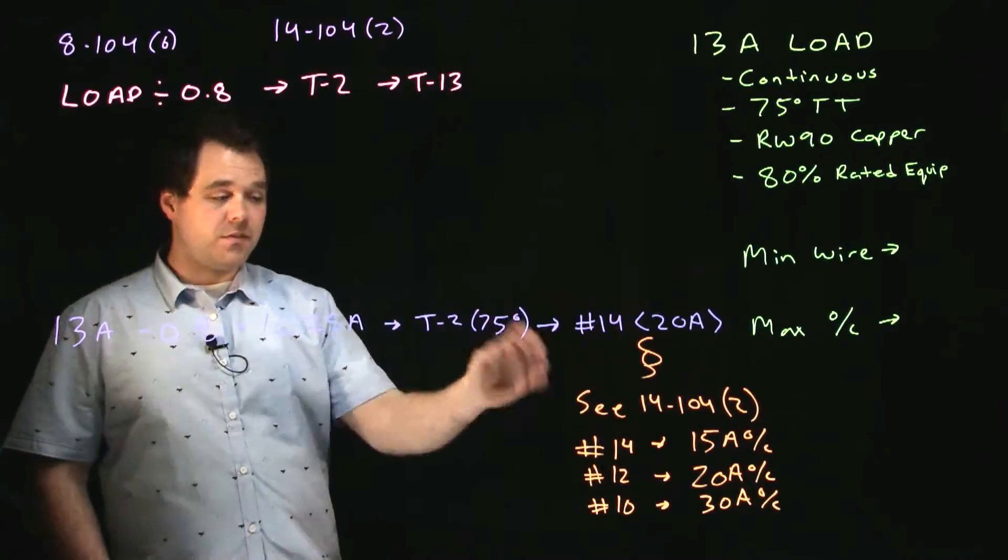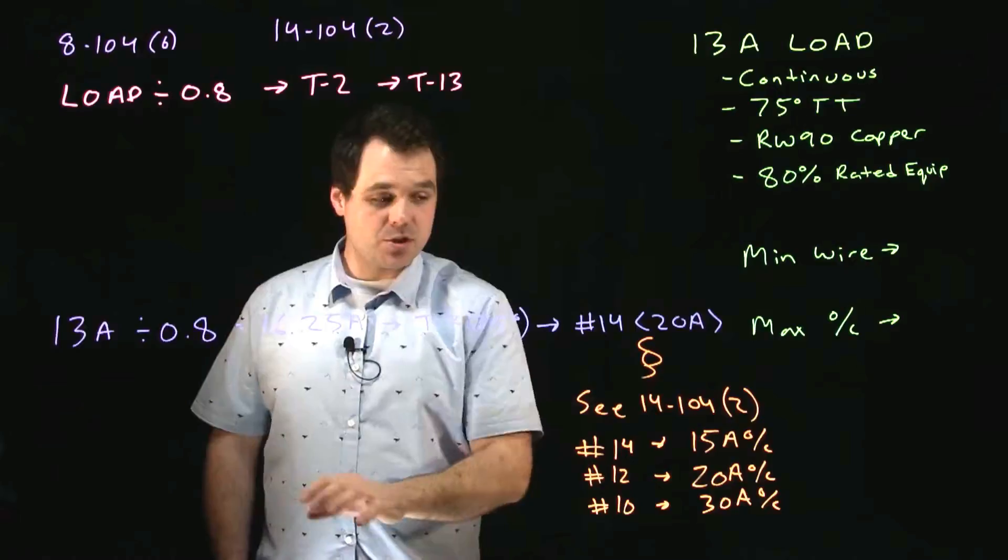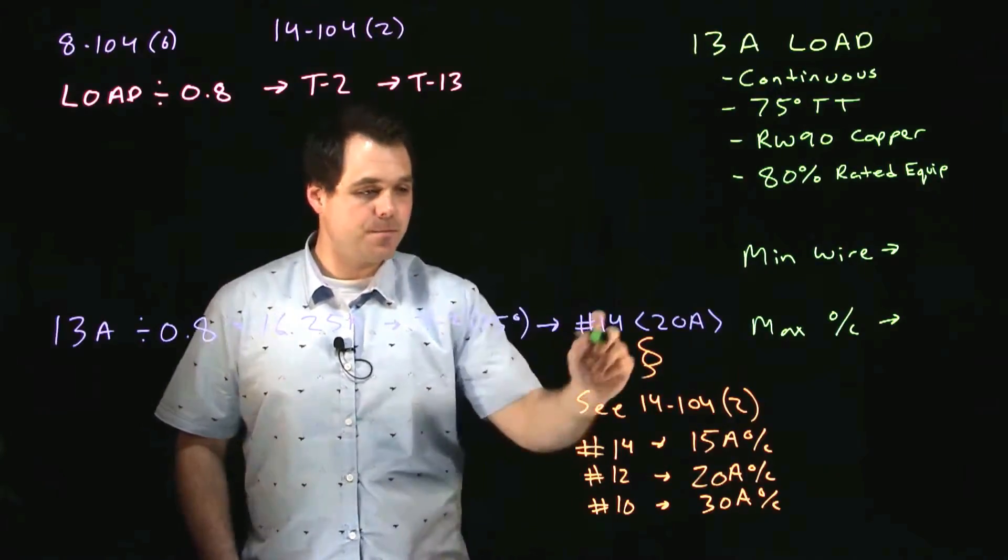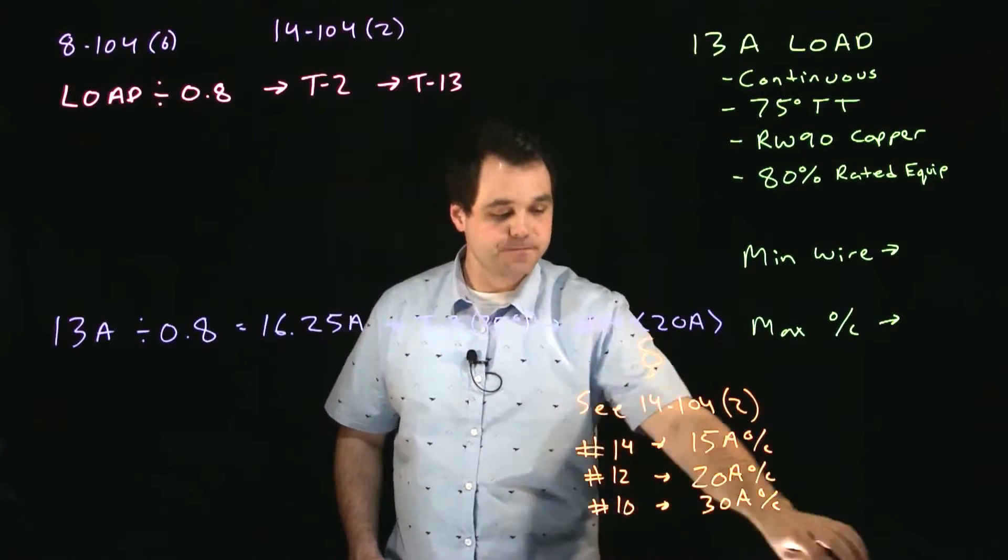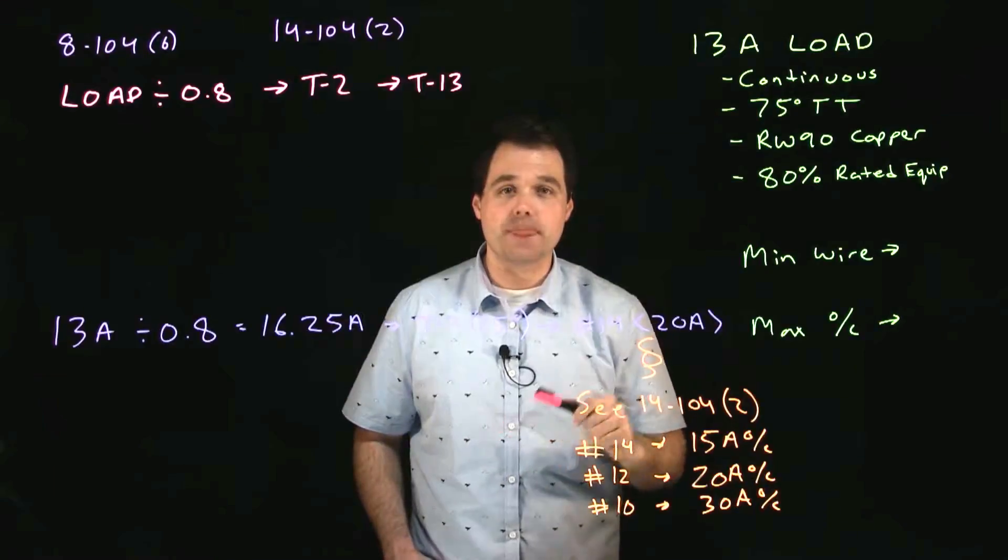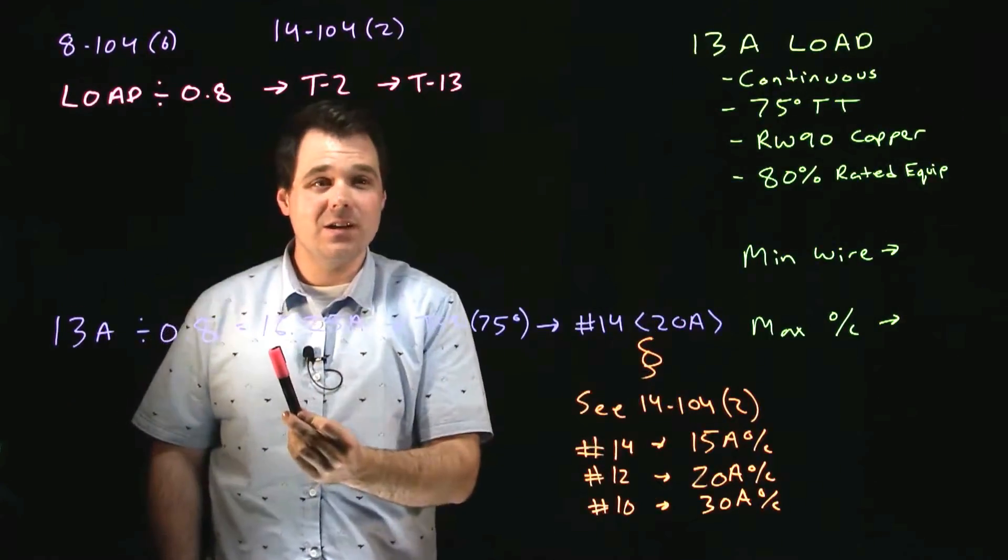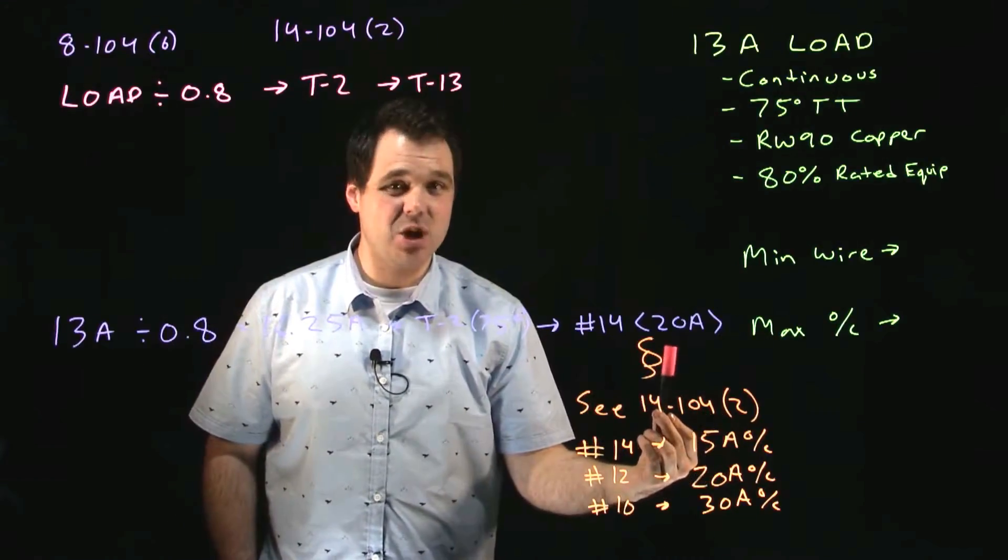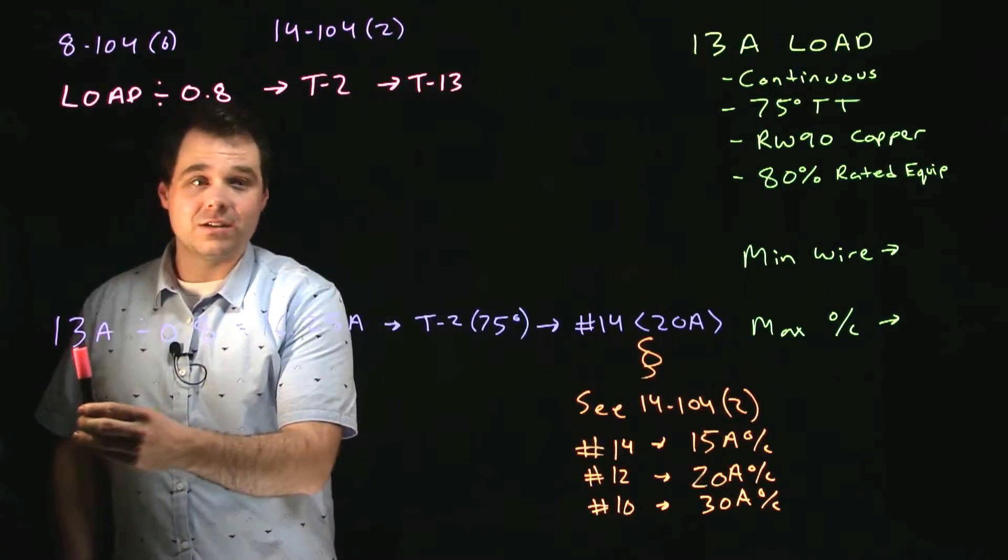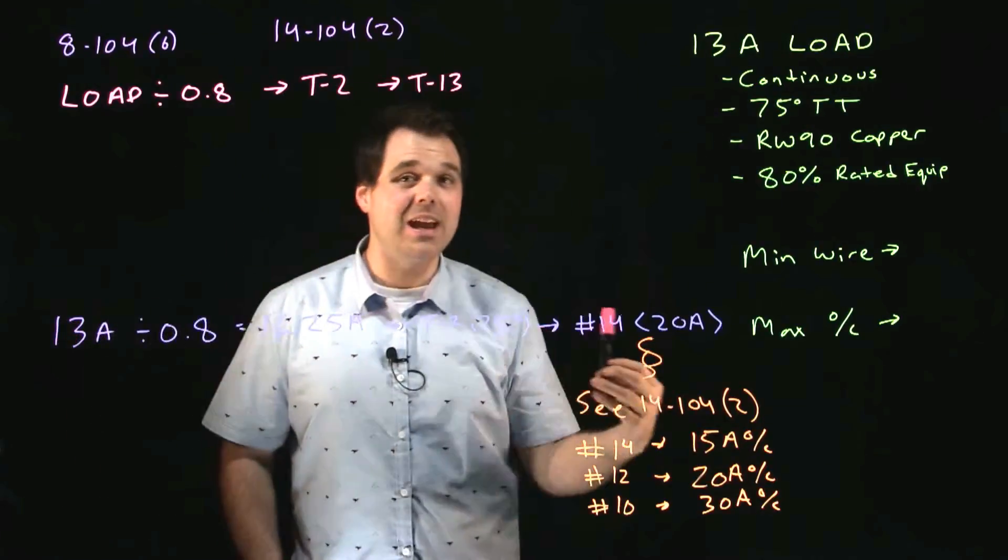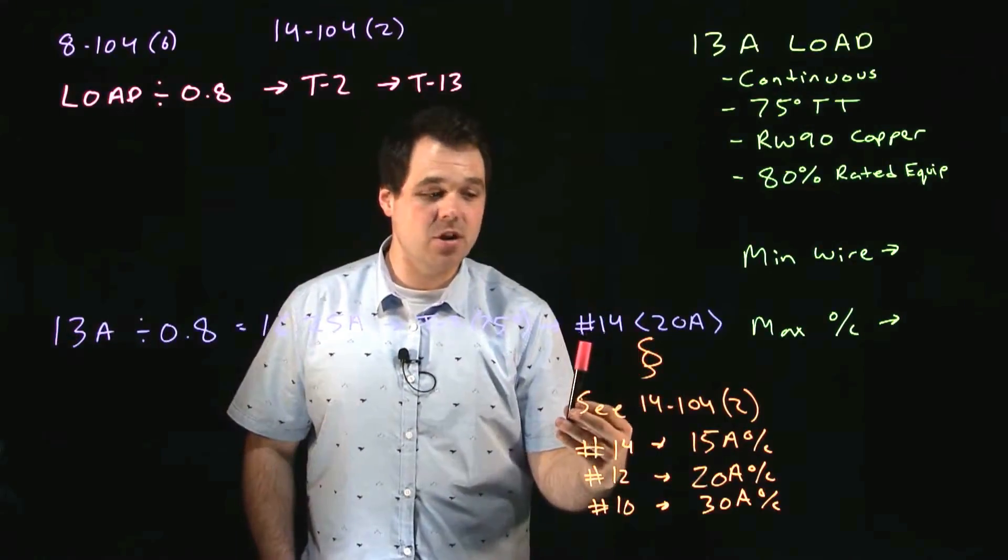If we were to put a 15 amp breaker on this number 14 which is what we are permitted to do by code, so we take our 14 gauge put on a 15 amp breaker. If we did that, 16.25 exceeds that 15 amp breaker. So that is not allowed. Or 13 amps exceeds 80% the rating of the breaker. So that is not allowed.